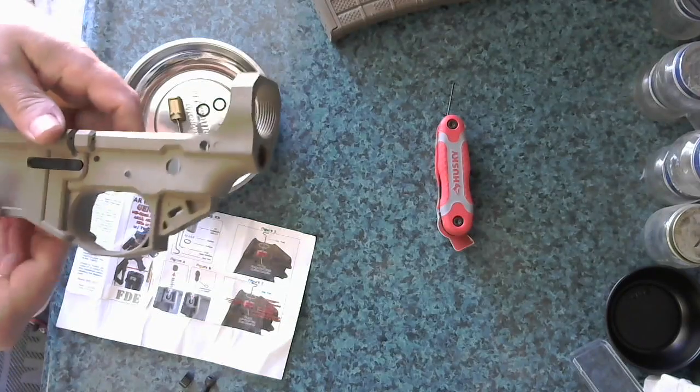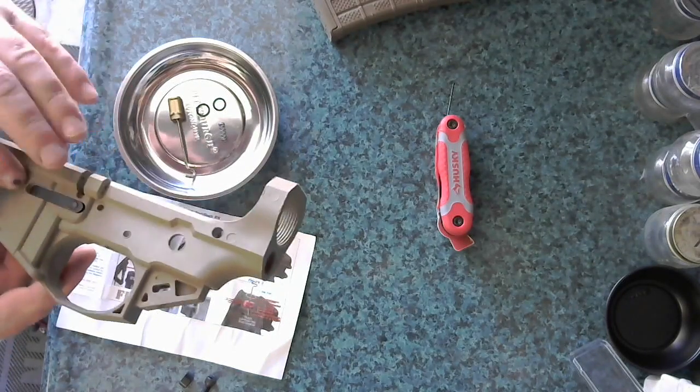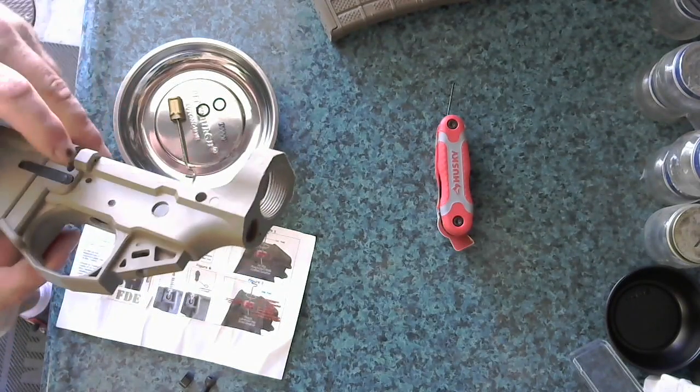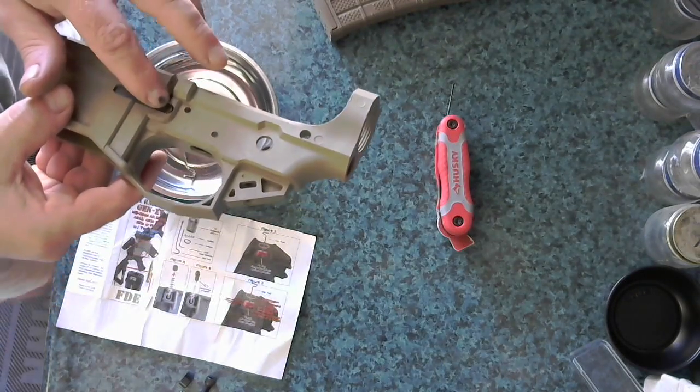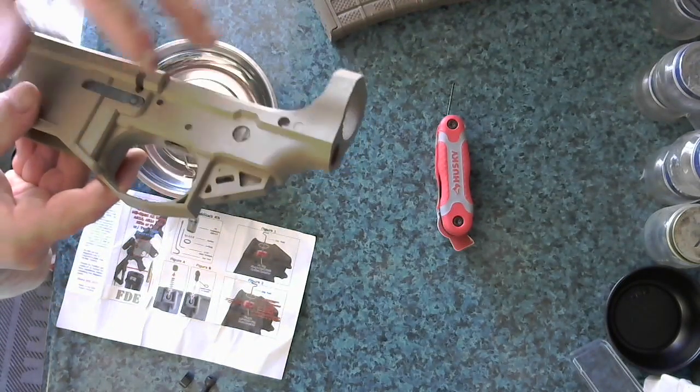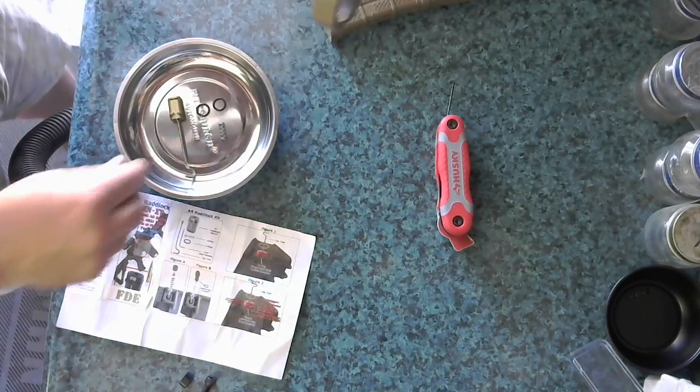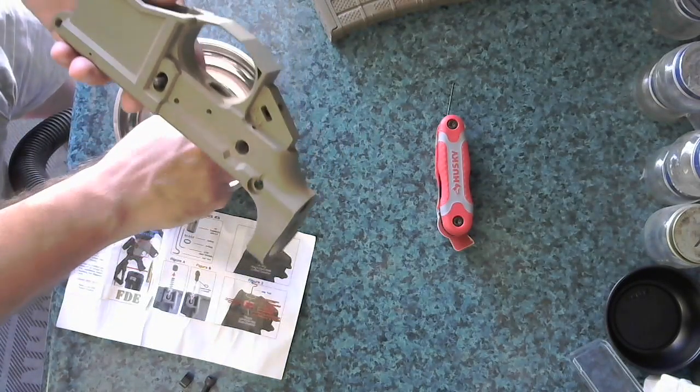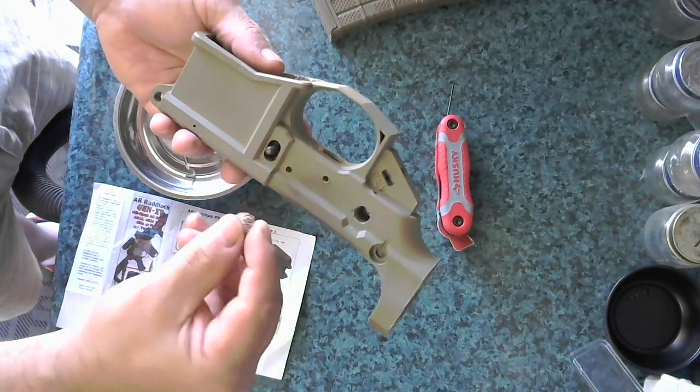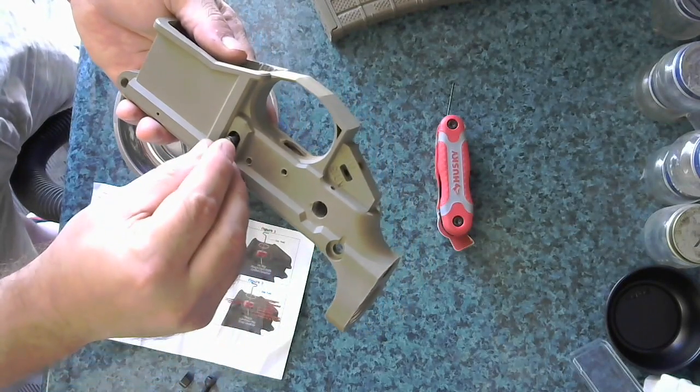So that drops in, I'm going to flip it over. Later on, I'm probably going to take this all apart and make the release part on this side the same color as everything else, since I'm trying to make everything FTE. From there, you're going to take the spring, and you're going to drop the spring on.